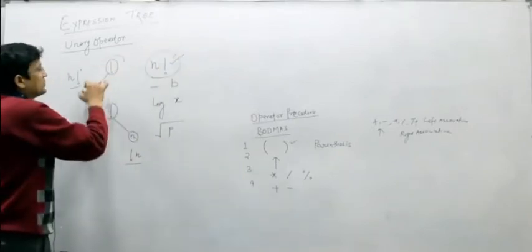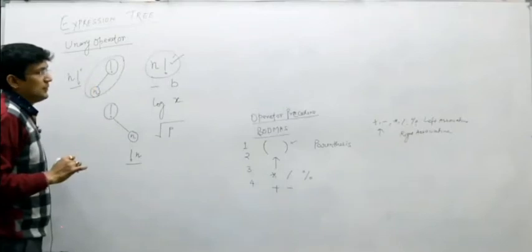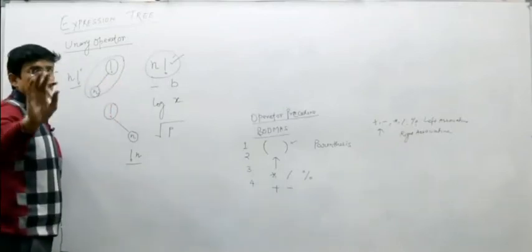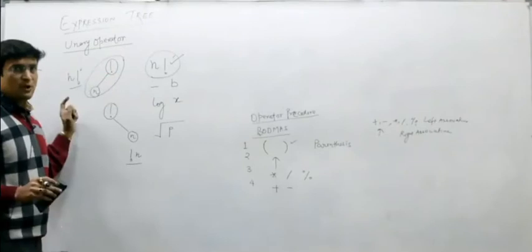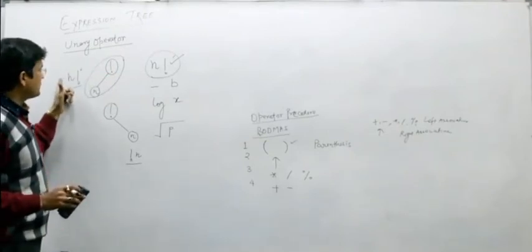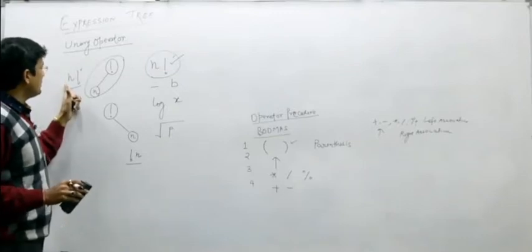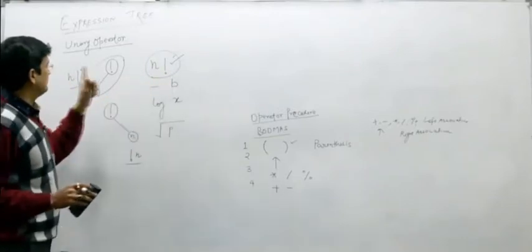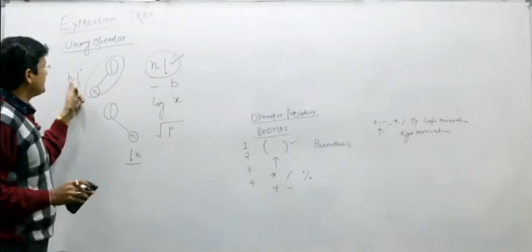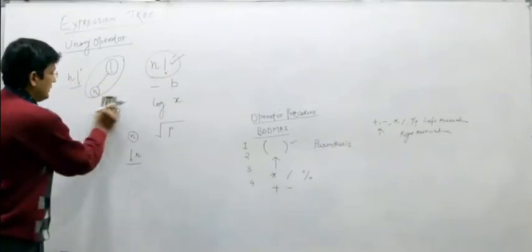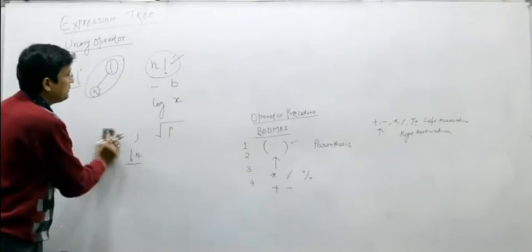The in-order traversal of the first tree gives n factorial, and of the second gives factorial n. Since factorial n matches the original expression, we select that tree. So, out of the two possible trees, we select the one whose in-order traversal is the same as the given expression.